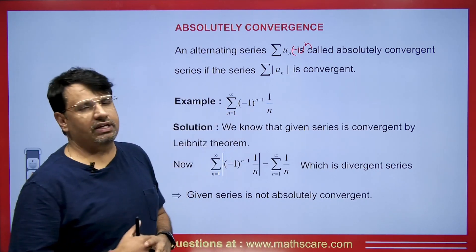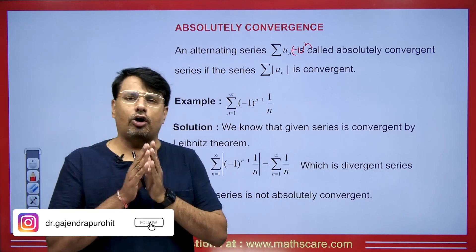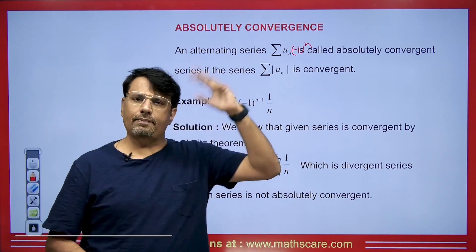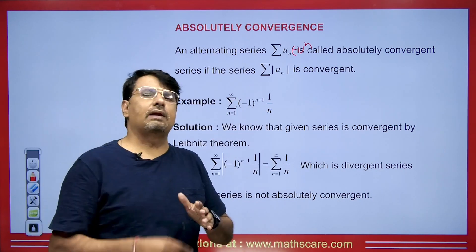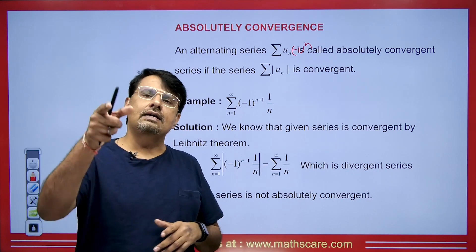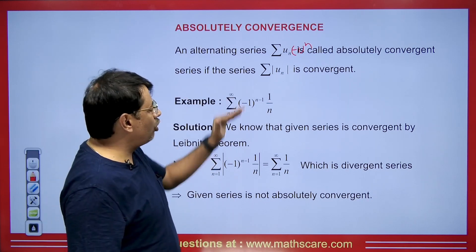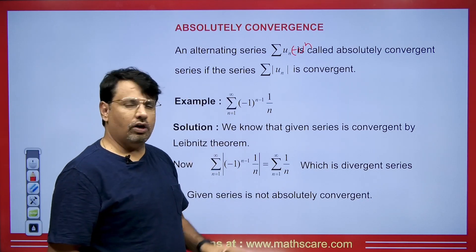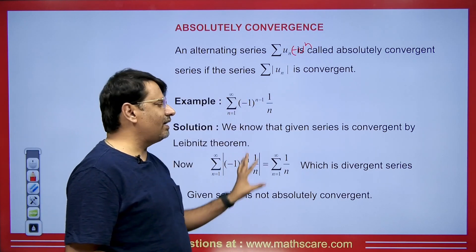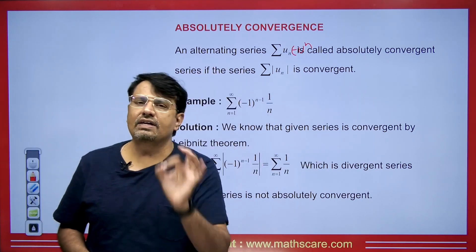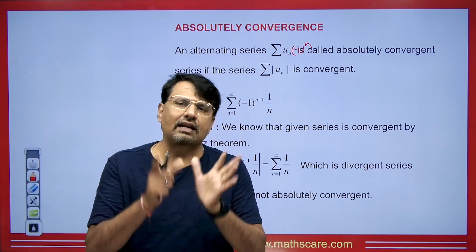Let's take an example. If we have the alternating harmonic series — we know it is an alternating series and it is convergent. From Leibniz's theorem, since uₙ = 1/n is decreasing and the limit as n tends to infinity is 0, the alternating series is convergent. But if we take its modulus, we get the harmonic series which is divergent by the p-series test. The modulus series is divergent, so this series is not absolutely convergent.